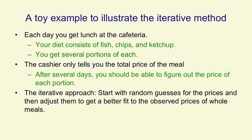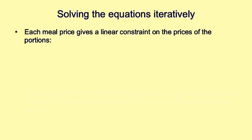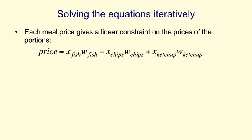In the iterative approach, you start with random guesses for the prices of portions, and then you adjust these guesses so that you get a better fit to the prices that the cashier tells you. Those are the observed prices of whole meals. So each meal you get a price, and that gives you a linear constraint on the prices of the individual portions.